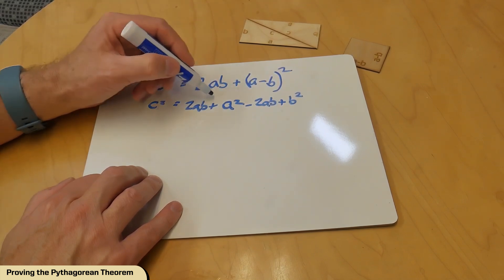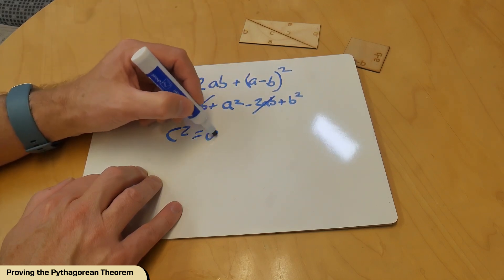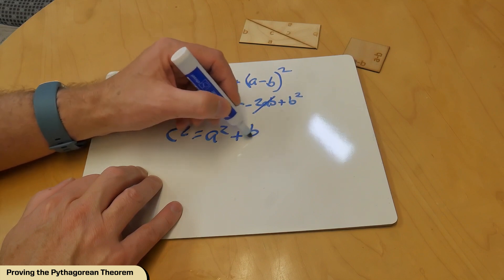Equals c squared. Now let's see. That, that cancel out. I get c squared equals a squared plus b squared. Look at that.